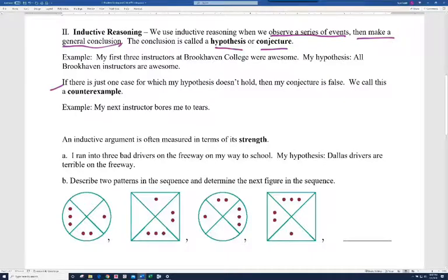So for example, I could say my first three instructors at Brookhaven College were awesome. So my hypothesis would be all Brookhaven instructors are awesome. Now it says here, if there is just one case for which my hypothesis doesn't hold, then my conjecture is false. We call this a counterexample. Alright, so here's it. So basically, I have three teachers from Brookhaven. They're all awesome. I conclude all Brookhaven instructors are awesome. Well, then I have my next instructor and he bores me to tears. That's a counterexample to my hypothesis. It does not support my hypothesis. I can now say it's no longer true. Now, if you talk to all your friends and they said all of their instructors were great, then this would be a strong, then you would have a strong argument based on all these different people's experiences.